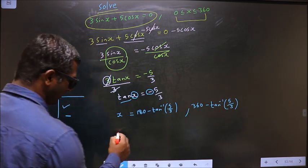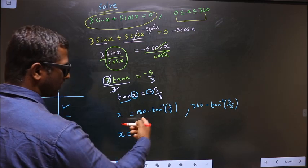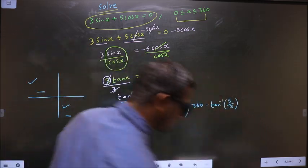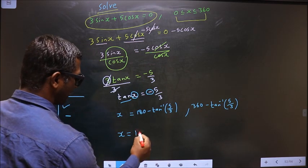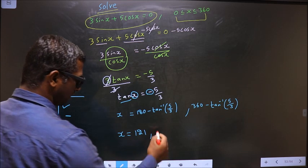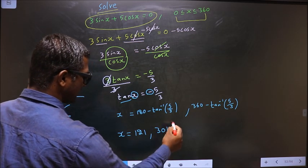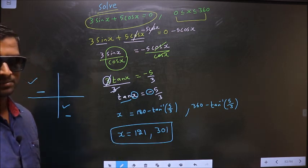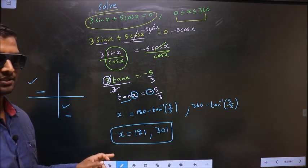Now, x equals. Put this in the calculator. You should get 121. Put this in the calculator. You get 301. These are the values for x. This is our answer.